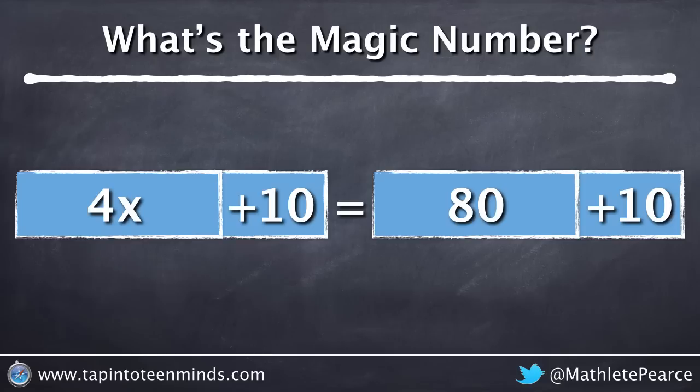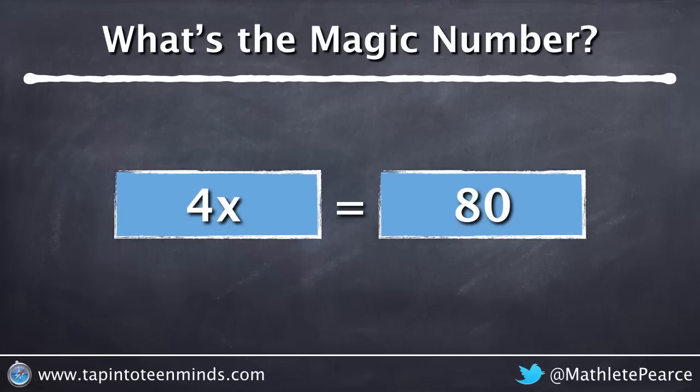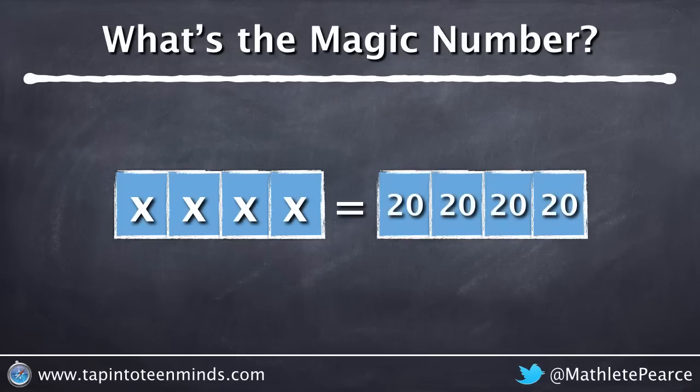So since there's a 10 on the left and a 10 on the right, really all I need to focus on is my 4x and my 80. So 4x has a value of 80, which means that 1x should equal 20.